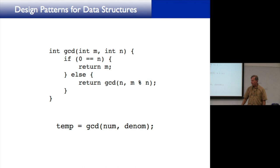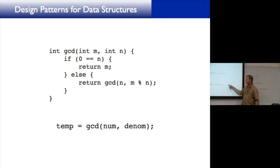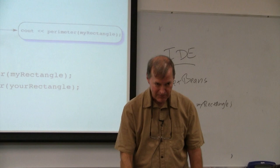Here's another example: GCD stands for greatest common divisor. This is a little recursive routine — if m and n are integers and n == 0, return m; otherwise return GCD(n, m % n). You can say 'temp = GCD(numerator, denominator)' and that one statement corresponds to many statements underneath, all hidden. That's procedure abstraction.